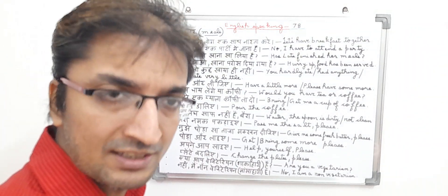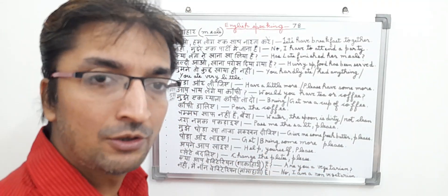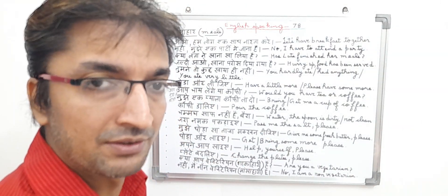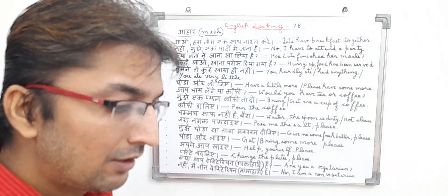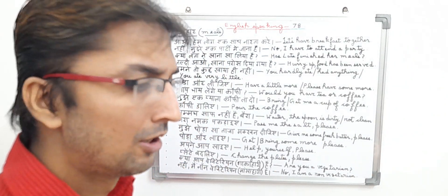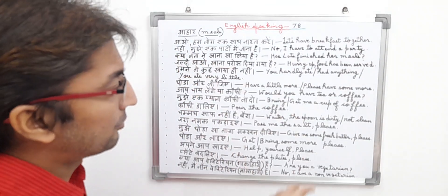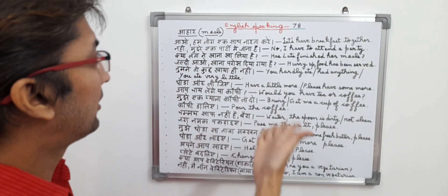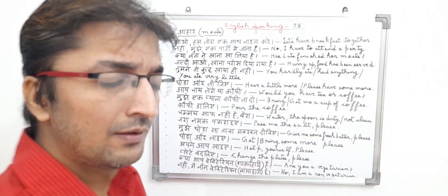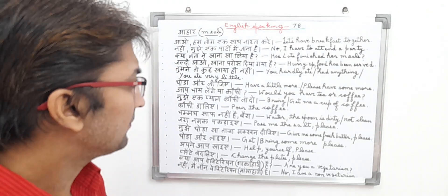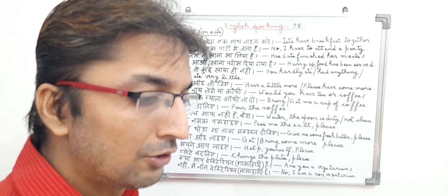So this was English speaking part 78, in which I tried to discuss how to use Ahar — meaning meals type sentences — in English when we do conversation in our daily life. Meals basically means the food which we eat, want to eat, like to eat, which is cooked at home, or which we try to eat with a group of friends and family members. I wrote the sentences in Hindi and translated them into English so that it becomes easier to understand. Kindly practice these sentences in your spare time — try talking in front of a mirror or with your parents, relatives, friends, or neighbors.